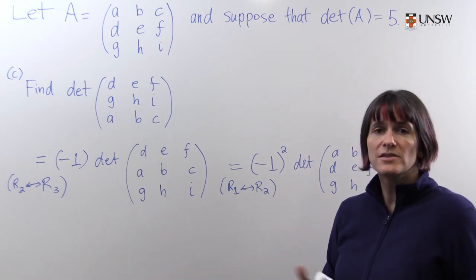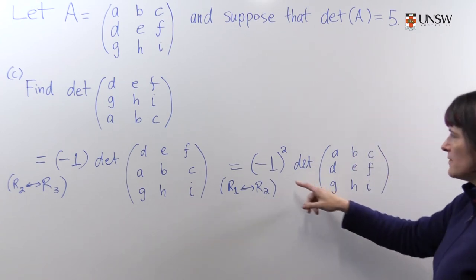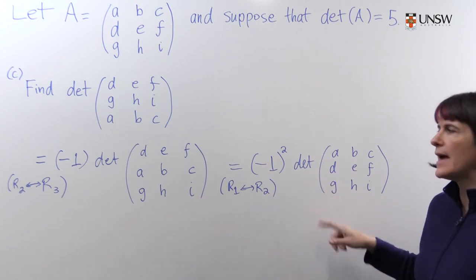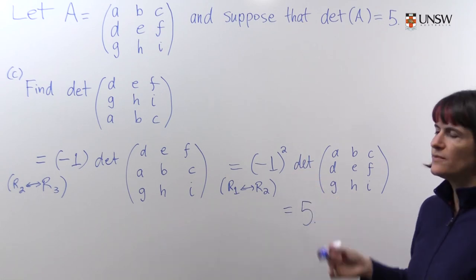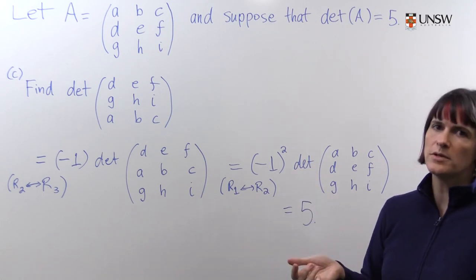The operation was row one was swapped with row two. And because minus one squared is just one, again, this is going to give us one times the determinant of A, which is five. So the determinant of this matrix is five. You just have to remember how many row swaps you performed.